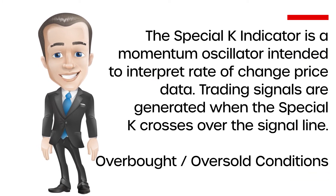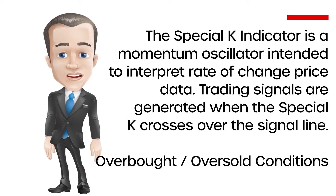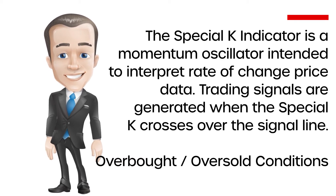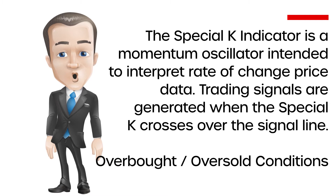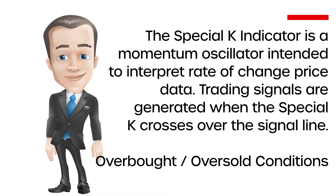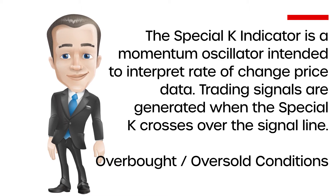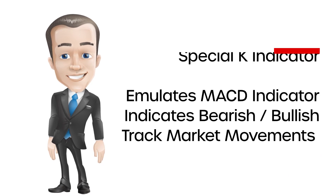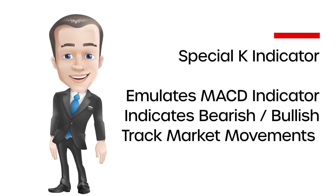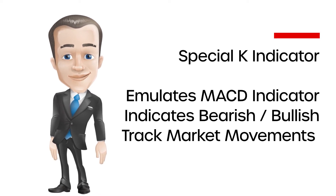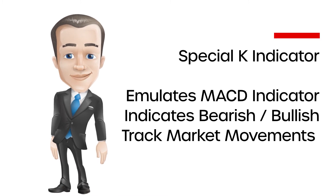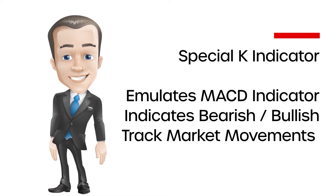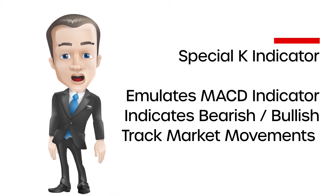The concept behind the oscillator is that price trends are determined by the interaction of many different time cycles, and that important trend reversals take place when a number of price trends are simultaneously changing direction. The Special K is a momentum oscillator intended to interpret the rate of change of price data. Trading signals are generated when the Special K crosses over the signal line, but traders also look for overbought or oversold conditions. The Special K emulates the MACD Indicator in that every time it crosses a specific level it could indicate a bearish or bullish move.